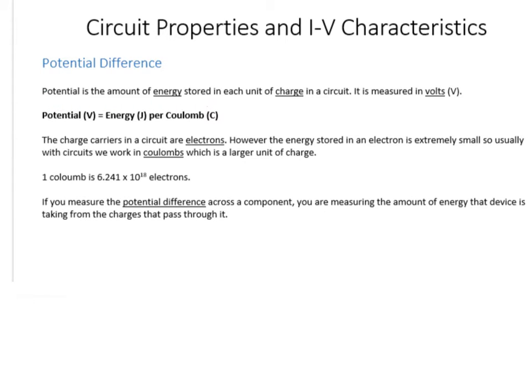You can calculate the potential using the equation: potential is energy per coulomb. A coulomb is a unit of charge - the charge carrier in a circuit is an electron, but the amount of energy stored in an electron is really small, so we work in bigger units called coulombs. One coulomb is 6.241 times 10 to the 18 electrons, so it can carry a reasonable amount of energy.